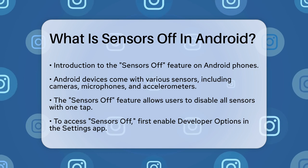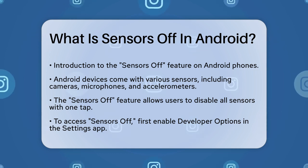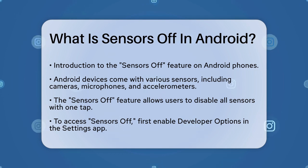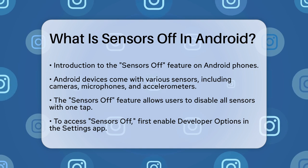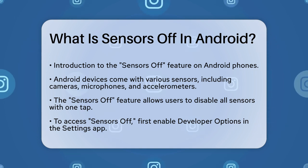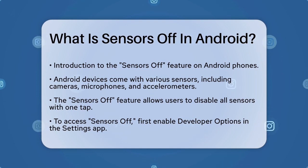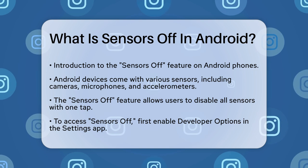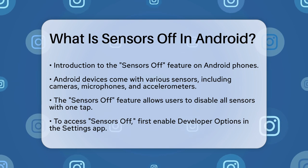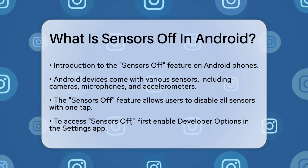First, you need to understand that your Android phone is packed with various sensors like cameras, microphones, accelerometers, and more. These sensors help your phone perform a wide range of functions, from auto-rotating the screen to using voice commands.